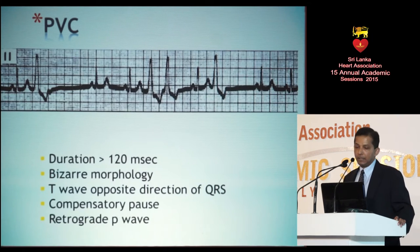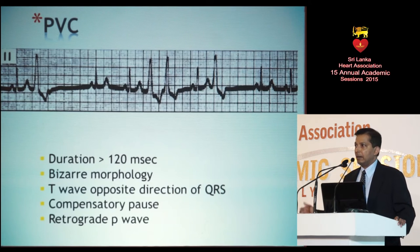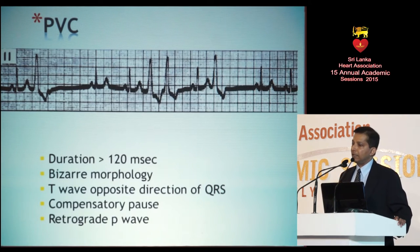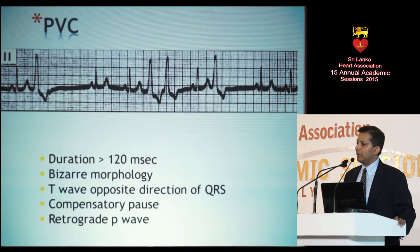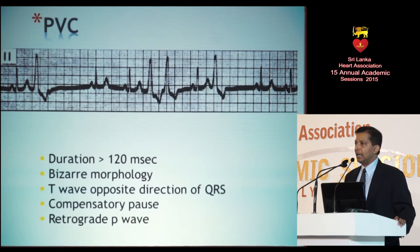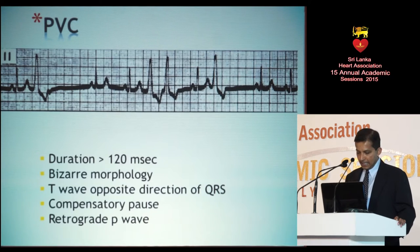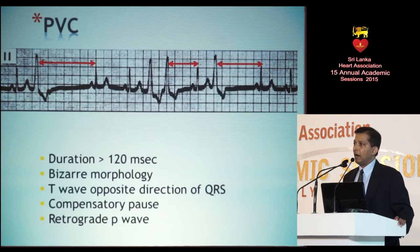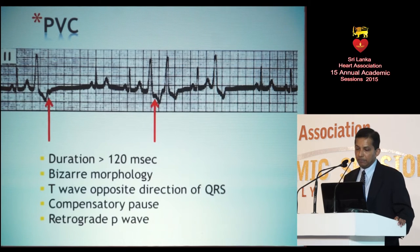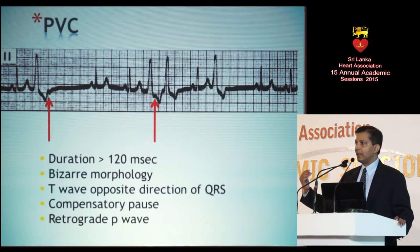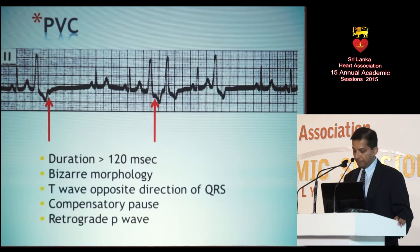Premature ventricular contractions, or premature ventricular complexes, are generally recognized as broad complex QRS complexes with a duration greater than 120 milliseconds. Some key features: they have a bizarre morphology, usually the T wave is in the opposite direction of the QRS, and there is what we call a compensatory pause. Also, sometimes we recognize what we call a retrograde P wave, if the QRS is conducted in the opposite direction to the atrium. These features might help you to recognize the PVCs.